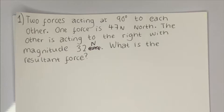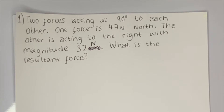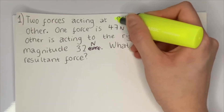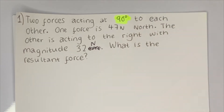Question one: two forces acting at 90 degrees to each other. One force is 47 newtons north, the other is acting to the right with a magnitude of 32 newtons. What is the resultant force? Don't worry if you don't know what to do here — we're going to go through the problem together. The most important thing you should always do in a physics question is highlight the most important information, including numbers and directions. So first I'm going to highlight that the forces are acting at 90 degrees to each other, because that's going to help when I draw my diagram.